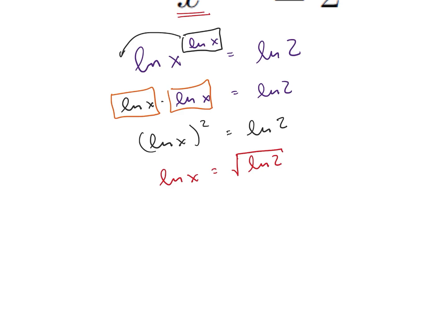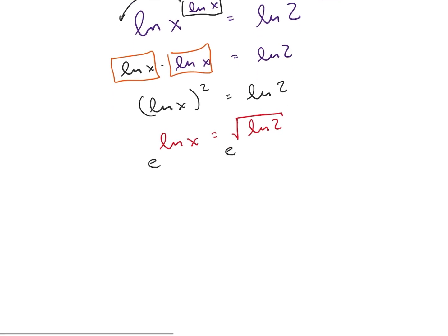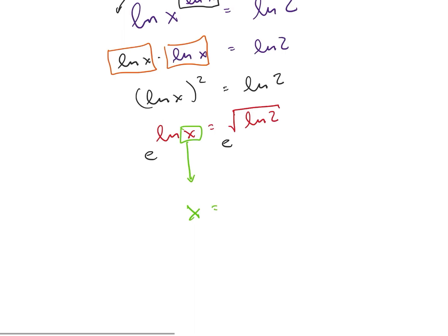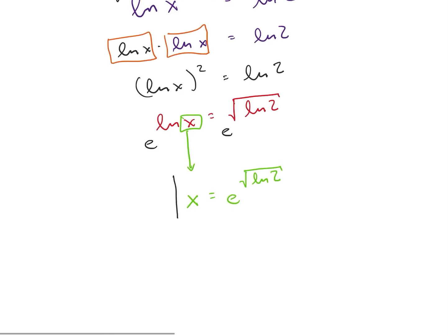And ultimately now we can take e to both sides of this expression. And we end up getting x coming out all by itself. So we get x is equal to, I'm going to write this nicely. So we have x is equal to e to the square root of the natural log of 2. And that is actually going to be our final answer to our problem.